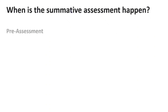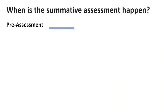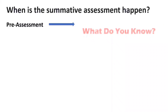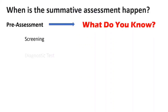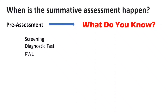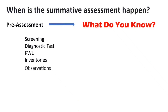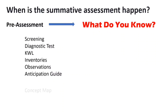When does Summative Assessment happen? The assessment sequence begins with Pre-assessment, which asks 'What do you know?' and uses tools such as screening, diagnostic tests, KWL, inventories, observations, and anticipation guides. This is followed by Formative Assessment, which tests what students are learning.